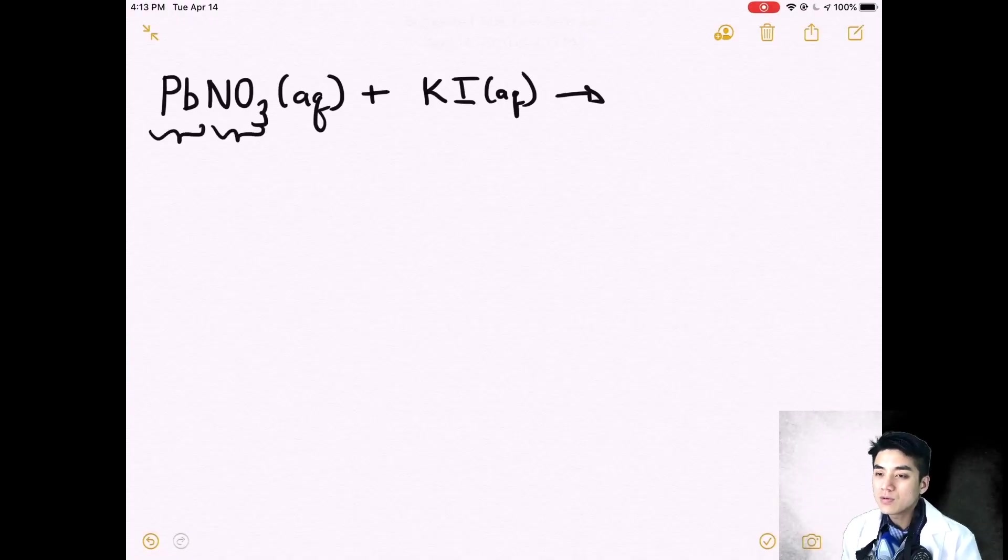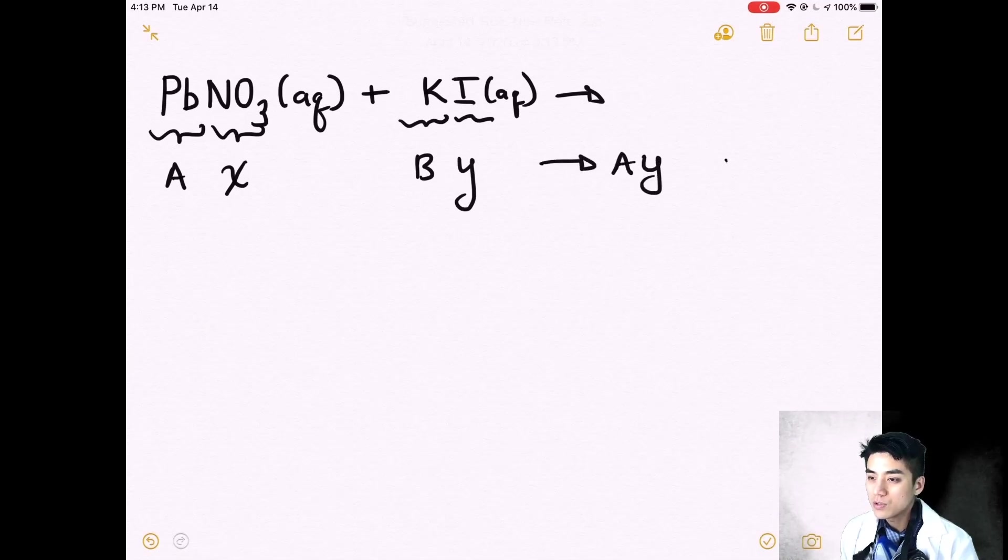This is a double displacement reaction so it's always in the form AX plus BY. On the product side, essentially what happens is A will switch with B so you're going to form AY plus BX. Now I'm going to circle my A and we're going to circle Y.